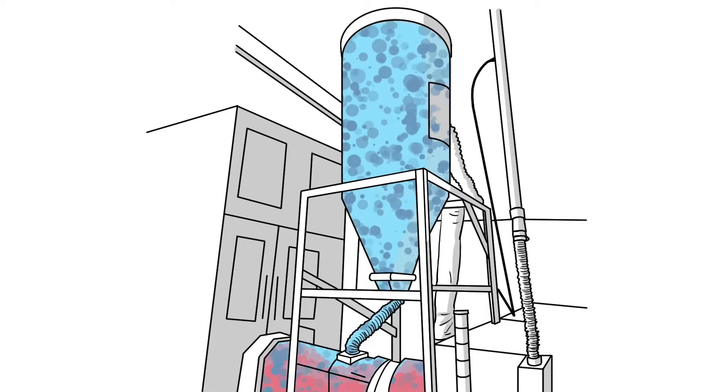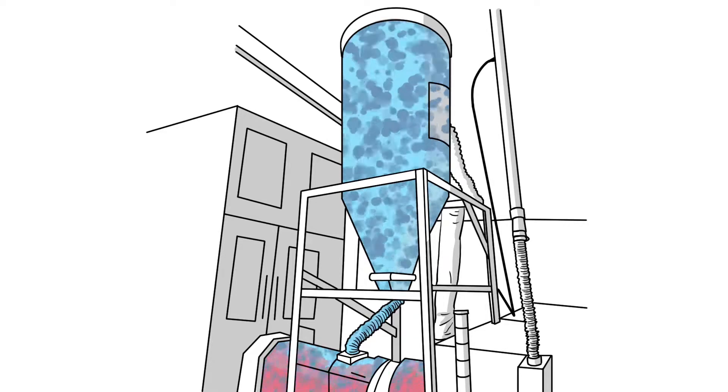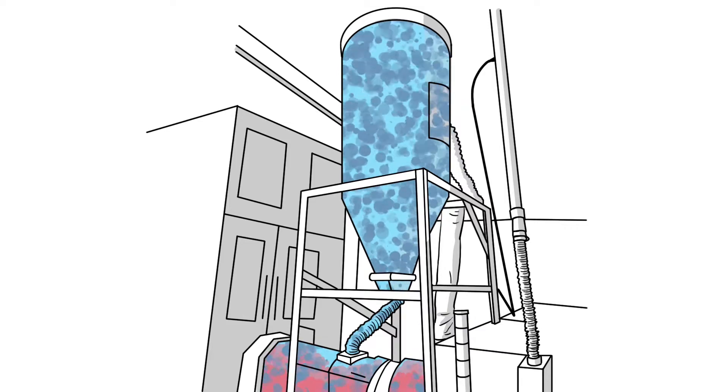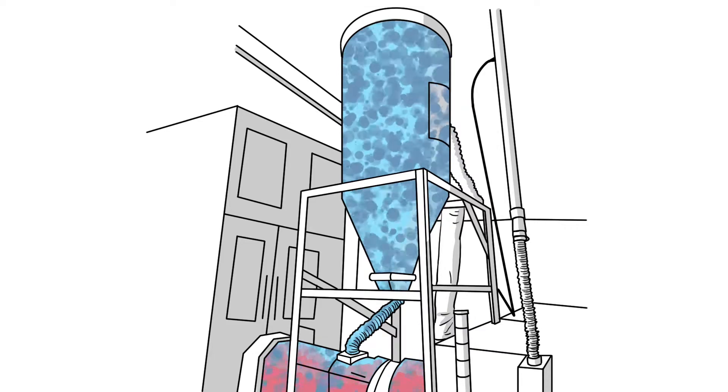In the first phase of the injection blow-molding process, the plastic resin is heated and melted as it is moved down the barrel by a screw to be injected to make the preform.